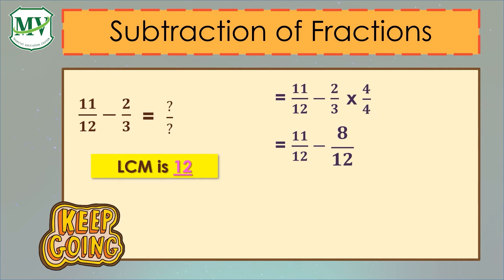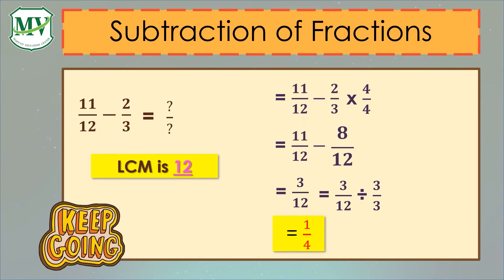Doing the same as addition, subtract the numerators and copy the denominator. 11 minus 8 equals 3 over 12. Is 3 over 12 the final answer? 3 over 12 can still be reduced to its simplest form. 3 and 12 can be divided by 3. So, 3 divided by 3 equals 1 and 12 divided by 3 equals 4. Therefore, 11 over 12 minus 2 over 3 equals 1 over 4.